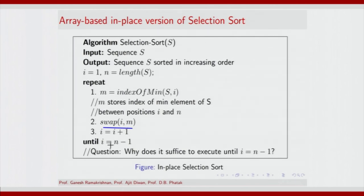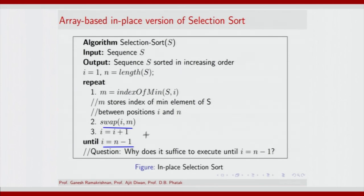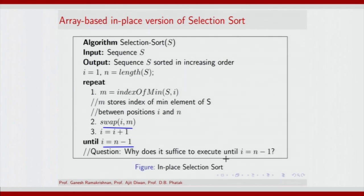An interesting point to note is the stopping criterion, which is i = n − 1. It turns out that by the time you have exhausted finding the minimum element between position i and the end, for i ranging from 1 to n − 1, the nth element has already been found to be the largest element. So it suffices to execute until i = n − 1 because the nth element has already been unanimously found to be the largest element in the array.